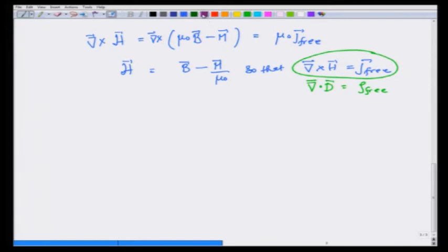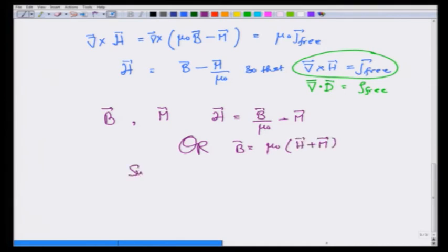So curl of H equals j_free, just like divergence of D was equal to ρ_free. To sum it up, magnetic field B and magnetization M, we have identified a vector H which equals B over μ₀ minus M, or equivalently B equals μ₀ times (H plus M), such that curl of H is j_free.